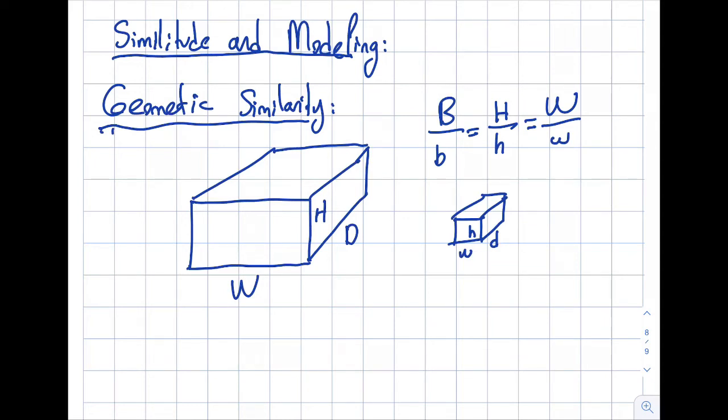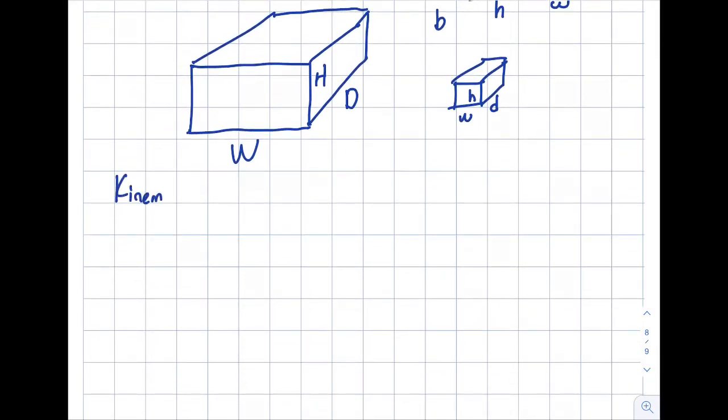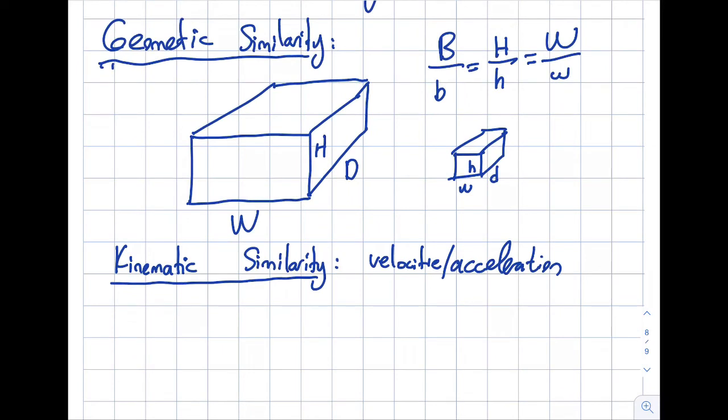So the next similarity requirement is called the kinematic similarity. If the flows are geometrically similar, I need to go ahead and establish kinematic similarity as well. What this establishes basically is the kinematics, so the velocities and accelerations in corresponding points have the same direction and they need to be constant multiples of each other in terms of the magnitude. So if I take back this over here, if I am having some flow over here, some air is flowing over here and there's some air flowing over here, accelerations and velocities must be similar in nature and they need to be a constant multiple of each other. That's what it means by the kinematic similarity. So I have to establish this as well.